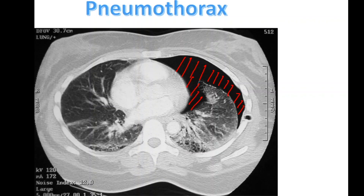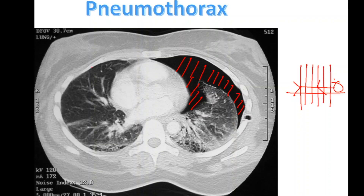Here we can see a patient who is laying on a gurney, and we're taking slices through their thorax. This is the anterior portion, this is their back down here, this is the left side, this is the right side of their body, and their feet are coming out at us. This is the left lung right here. As you can see, it is not fully inflated — it is deflated. It should be touching the edge of the inside of the thoracic cage all the way around, just like the right one is on this side.